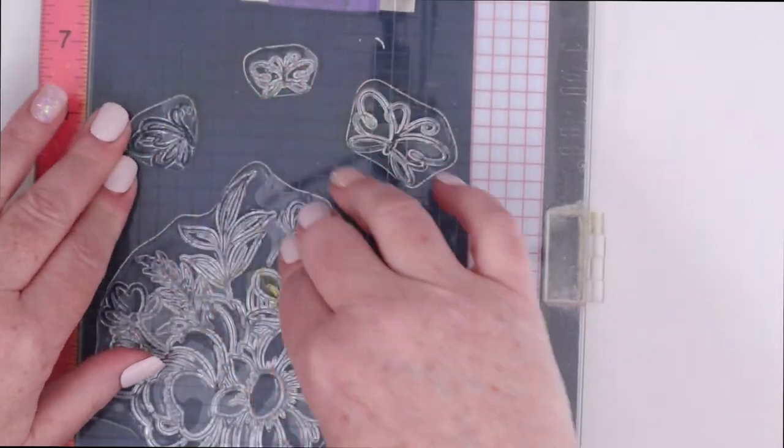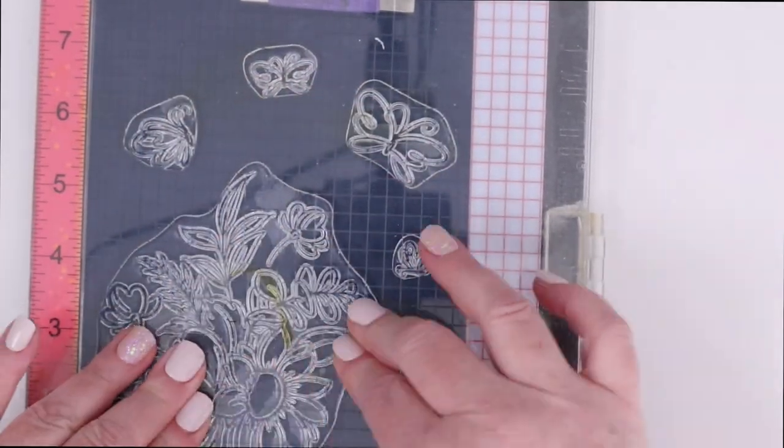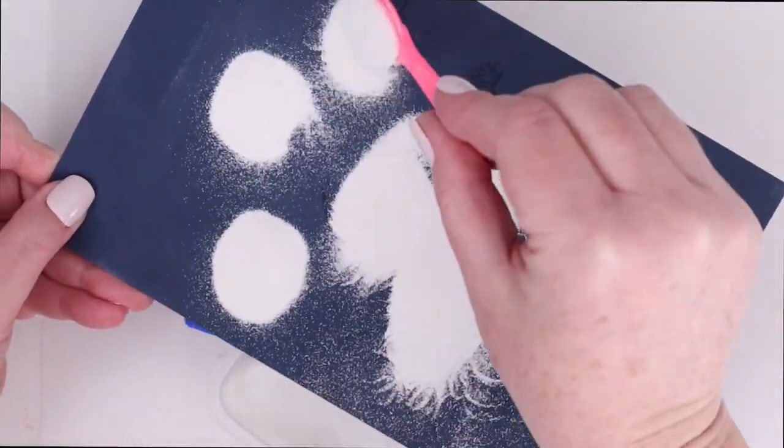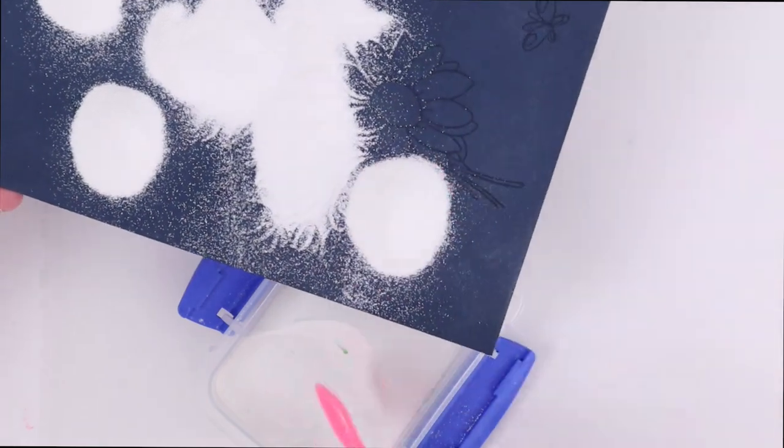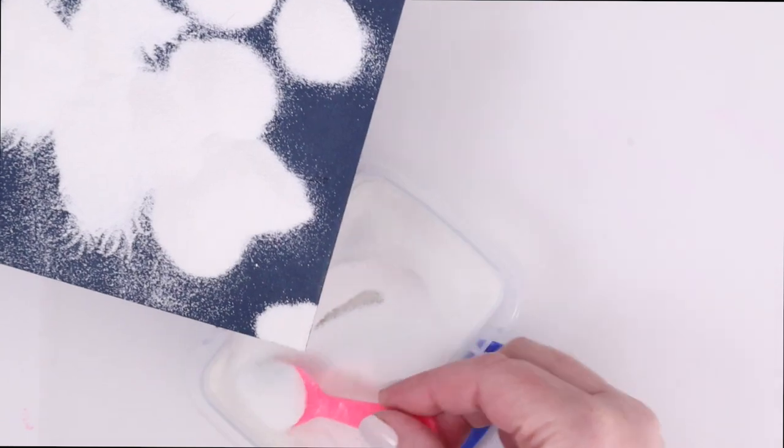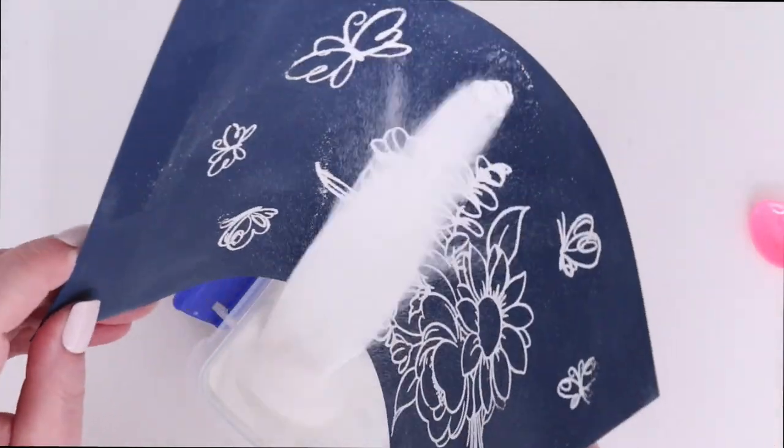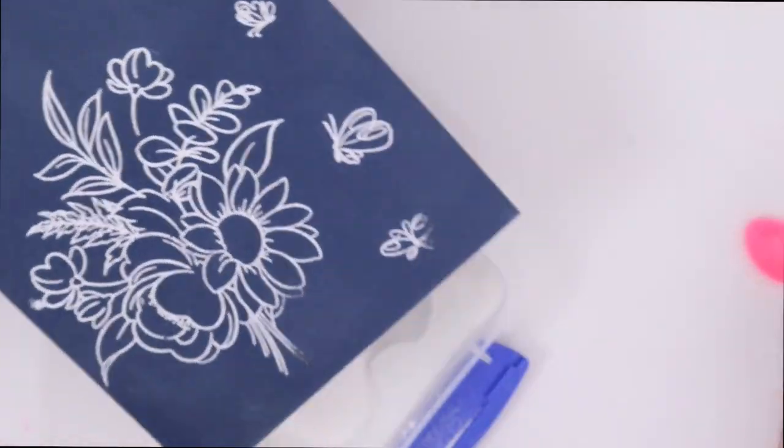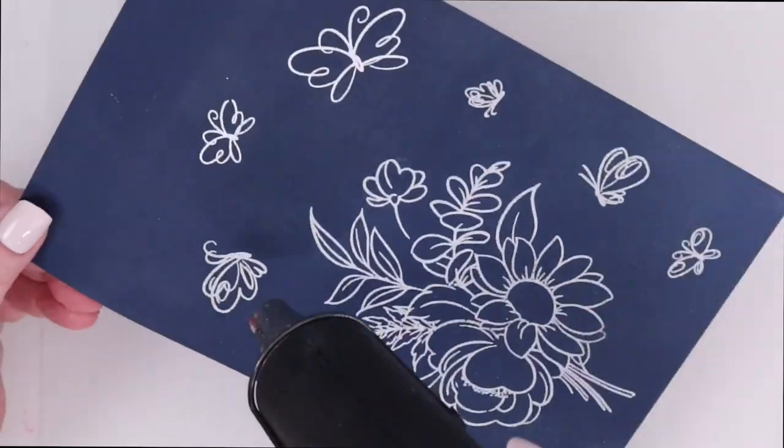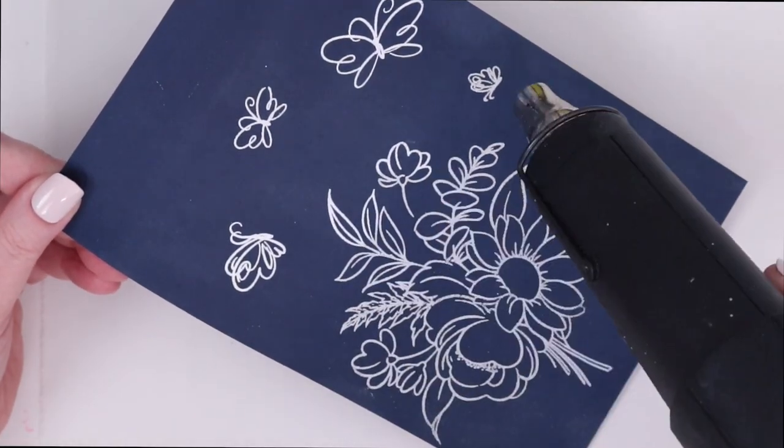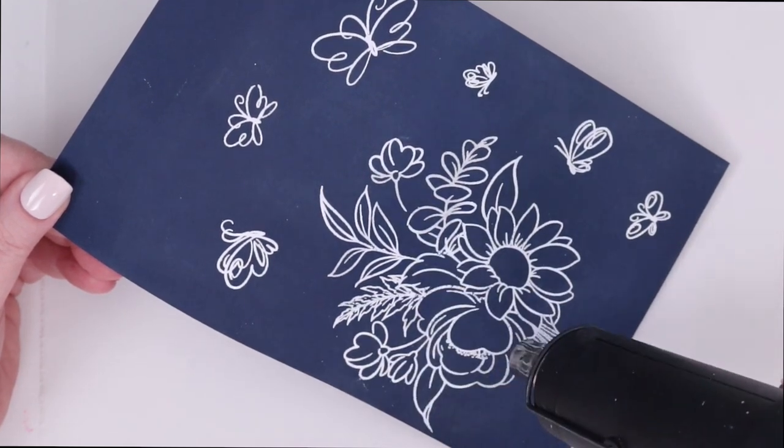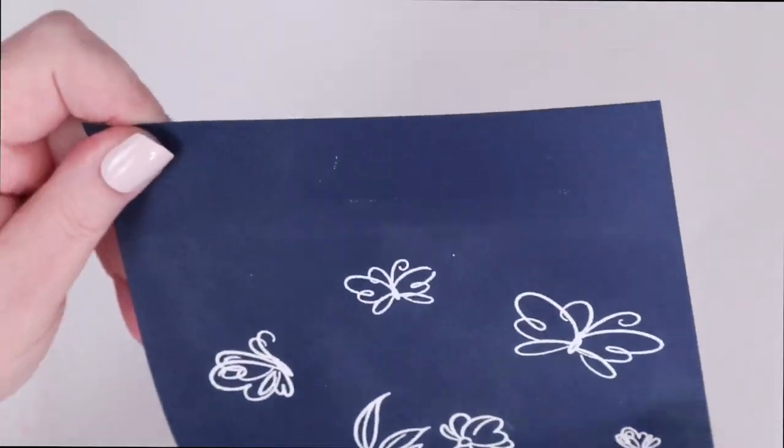Then I am going to ink up the stamps with Versamark ink and apply some pressure and get them all stamped out on one piece of paper. Then I add white embossing powder over everything, so I am just scooping it all out and making sure that all of the images are completely covered with white embossing powder. Then just gently tapping that cardstock on the side to get the excess off and using my heat tool to melt all that embossing powder.